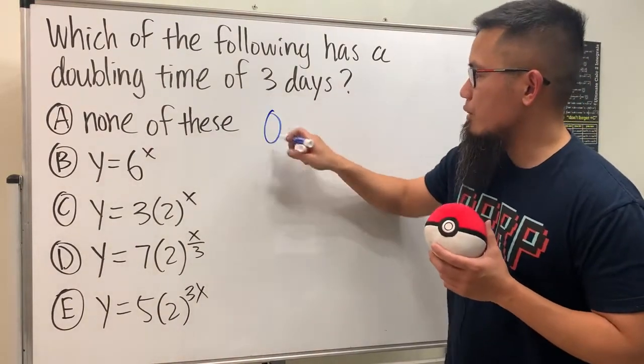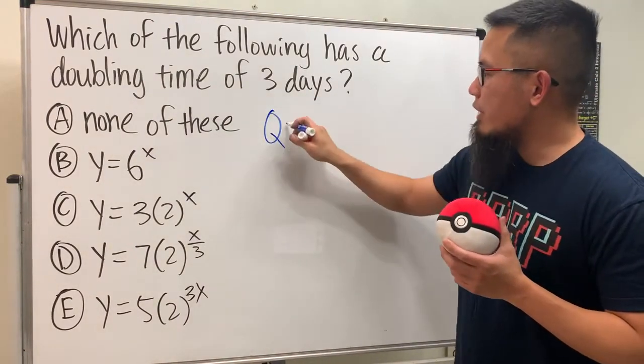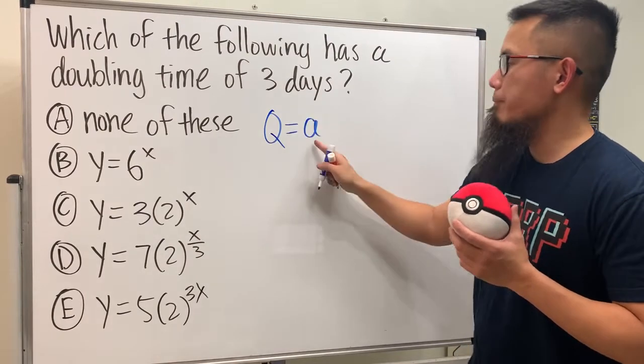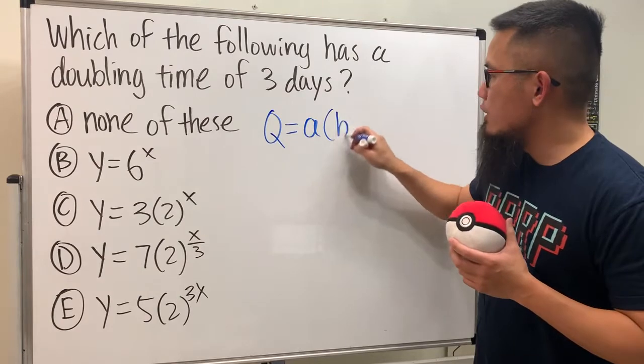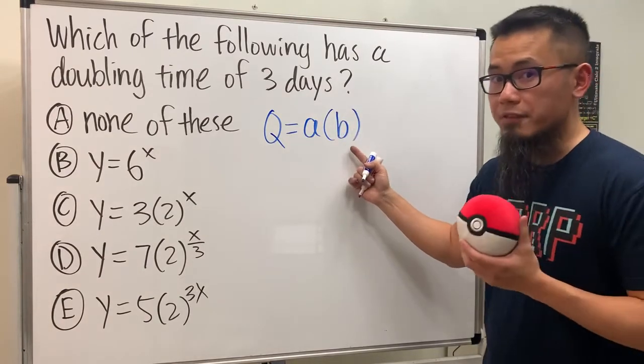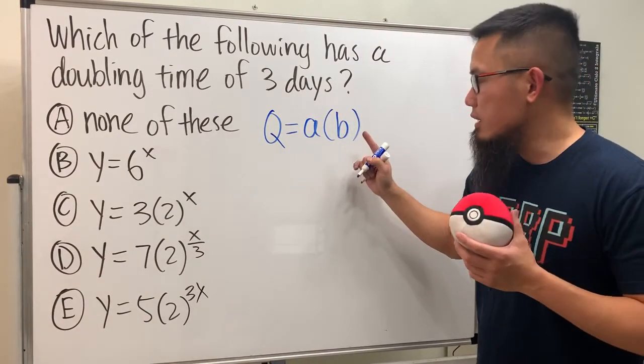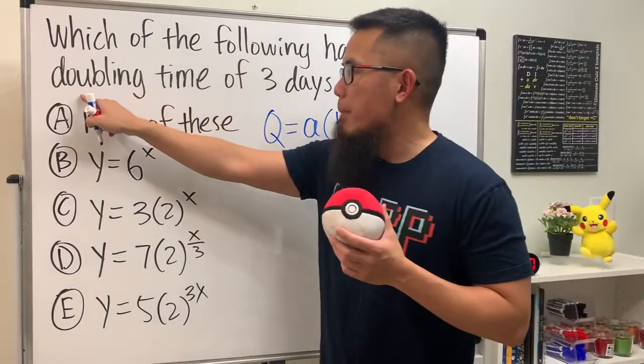I will put down Q stands for quantity, this right here is equal to a which stands for initial amount, and then we multiply by b right here and that's the growth factor. And the reason I'm using this is because we're talking about doubling time.